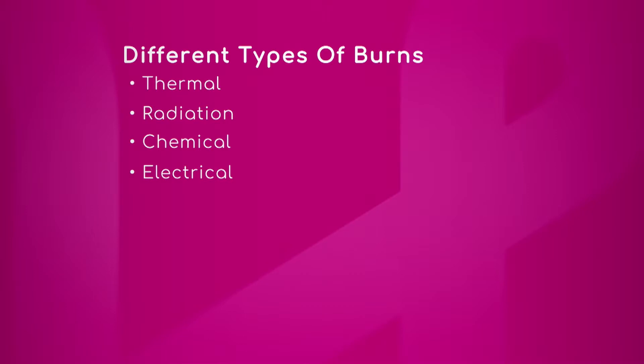Chemical burns are usually seen in industrial settings. You'll see household chemicals like Drano, which is a very strong alkaline, and patients who work in the metal industry often work with very strong acids used to clean metal. Chemical burns result from the transfer of ions — hydrogen and other components of the chemicals involved.